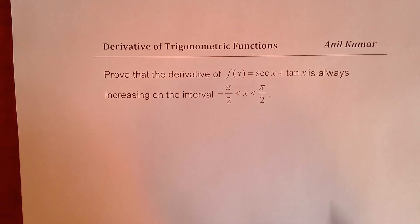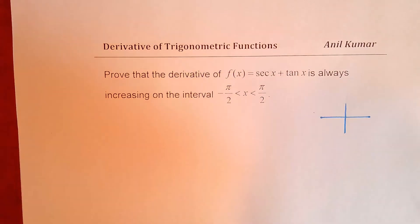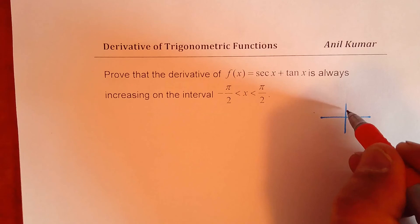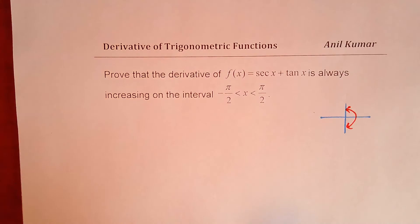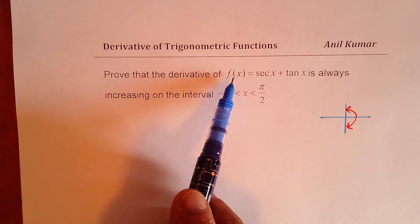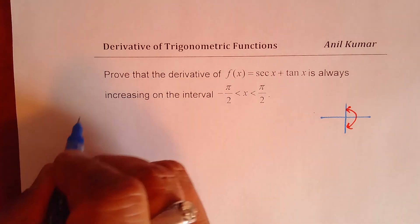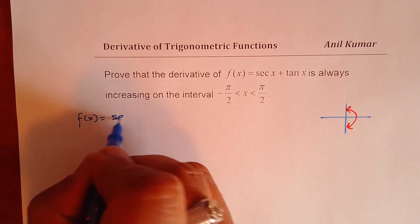So we are talking about the interval in quadrant 1 and in quadrant 4. That is the interval. When we say that it is always increasing, that means the derivative is positive. So we are given the function f of x as equal to secant x plus tan x.